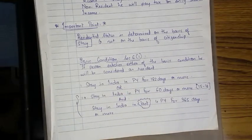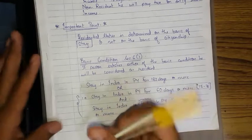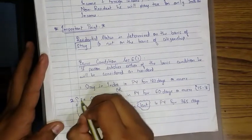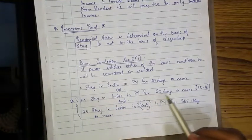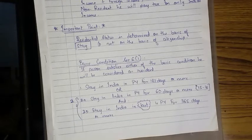Basic condition under Section 6(1): if a person satisfies either of the basic conditions, he will be considered resident. Condition 1(a): stay in India in the previous year for 182 days or more. Condition 1(b) — both parts fulfilled cumulatively: stay in India in the previous year for 60 days or more, AND stay in India in the last four previous years for 365 days or more.